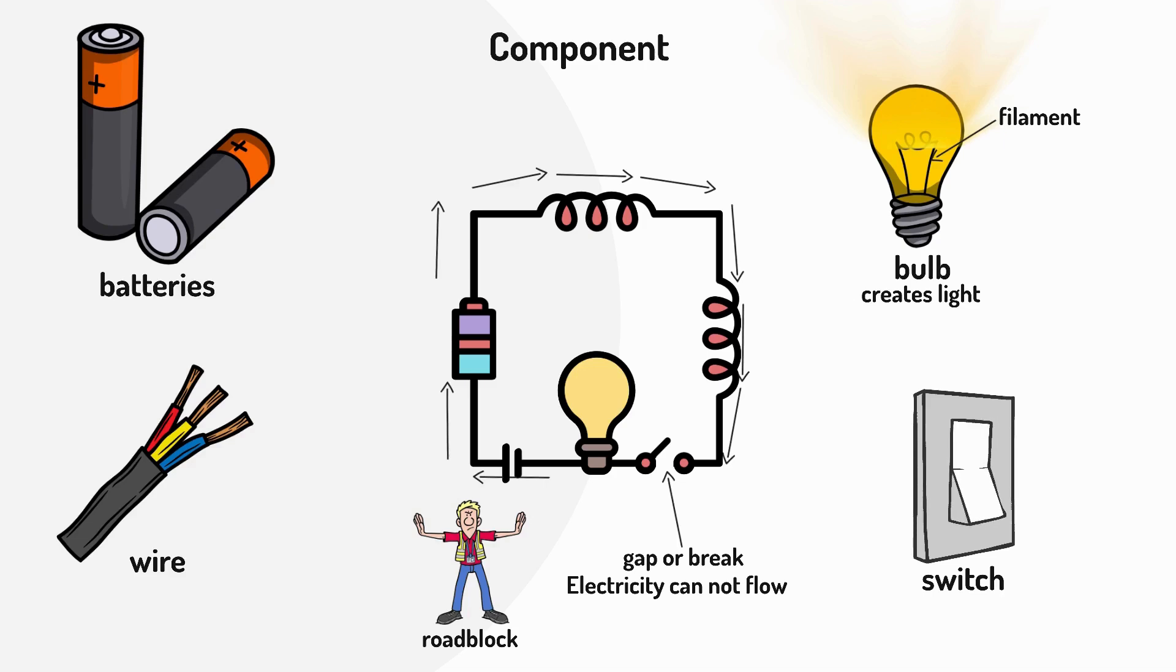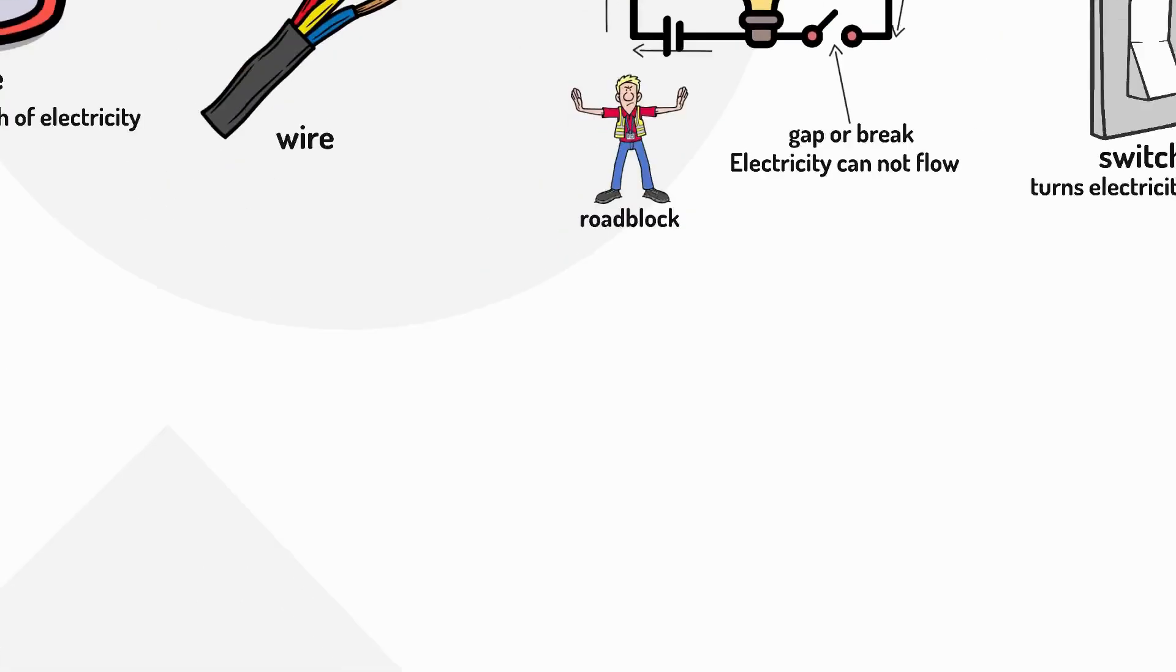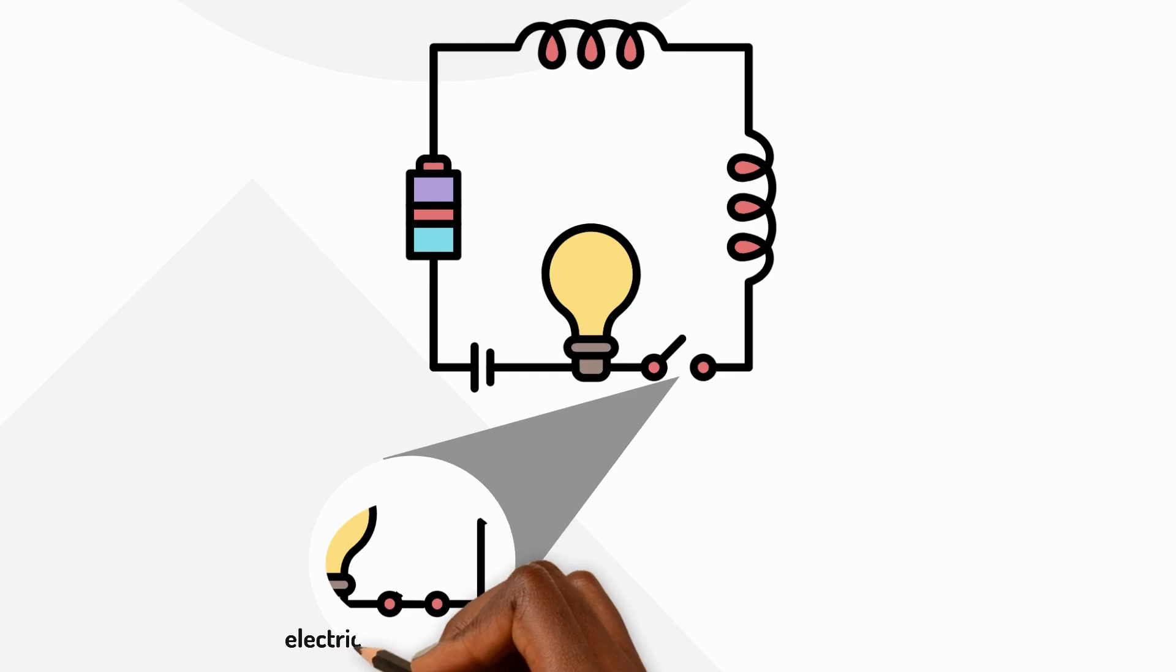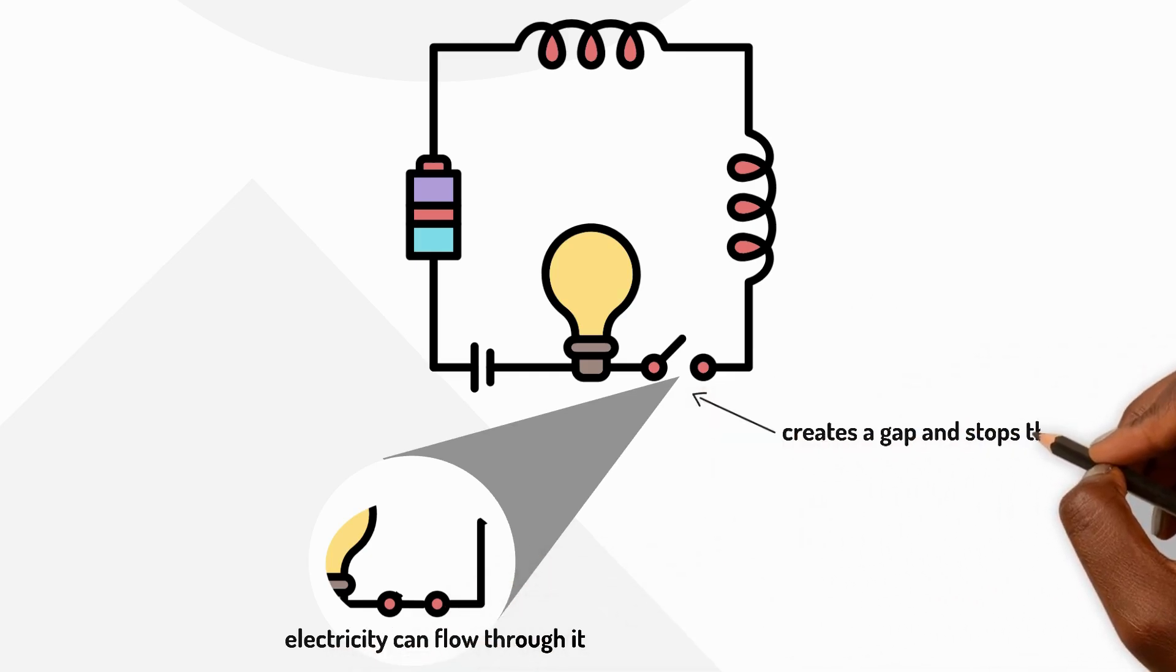A switch lets us turn electricity on and off without unplugging anything. When the switch is closed electricity can flow through it. When the switch is open it creates a gap and stops the flow.